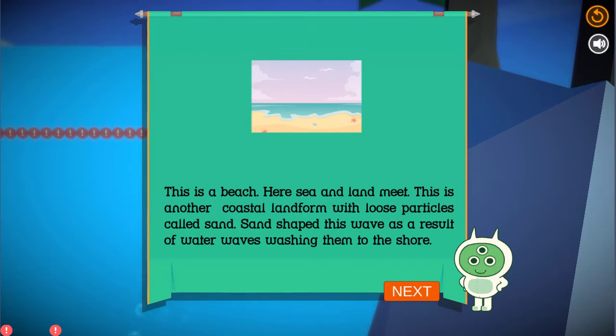This is a beach. Here sea and land meet. This is another coastal landform with loose particles called sand. Sand shaped this way as a result of water waves washing them to the shore.